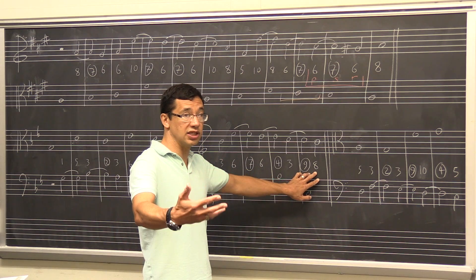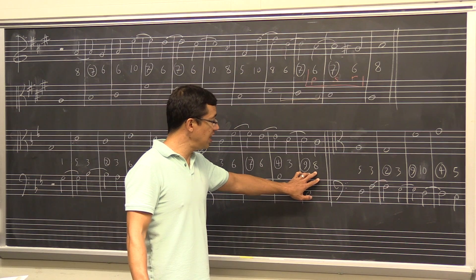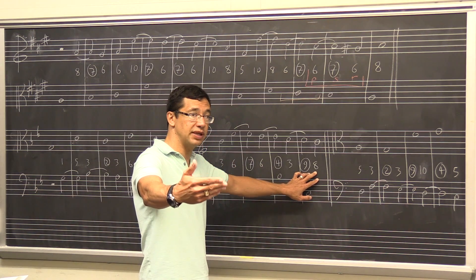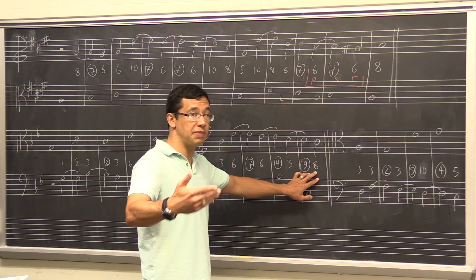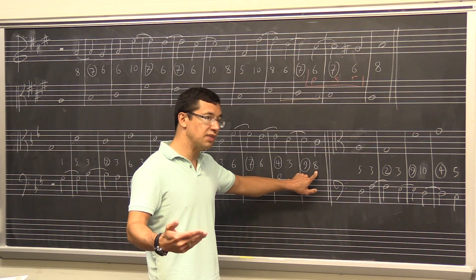You can chain these with other suspension types, but if you've got a downward descent in your cantus firmus, you can't chain together multiple nine-eight suspensions in a row. It's going to sound like parallel octaves because the ear tends to connect those weak beats.